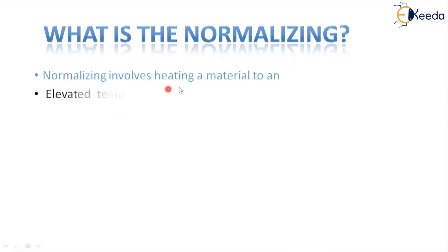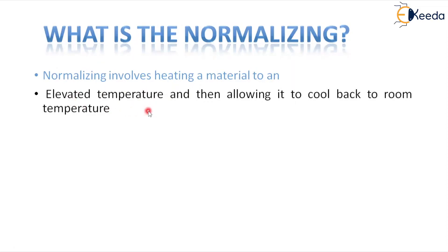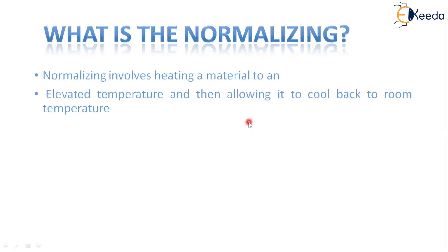The normalizing process involves heating the material to an elevated temperature — that is, above the critical temperature — and then allowing it to cool back to room temperature. These are the two main things we adapt in the normalizing process.